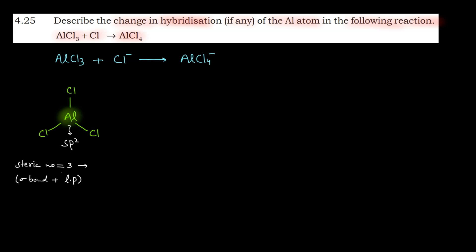When the hybridization is sp2, the structure — or rather the geometry — that you get is trigonal planar. This was the analysis for AlCl3.